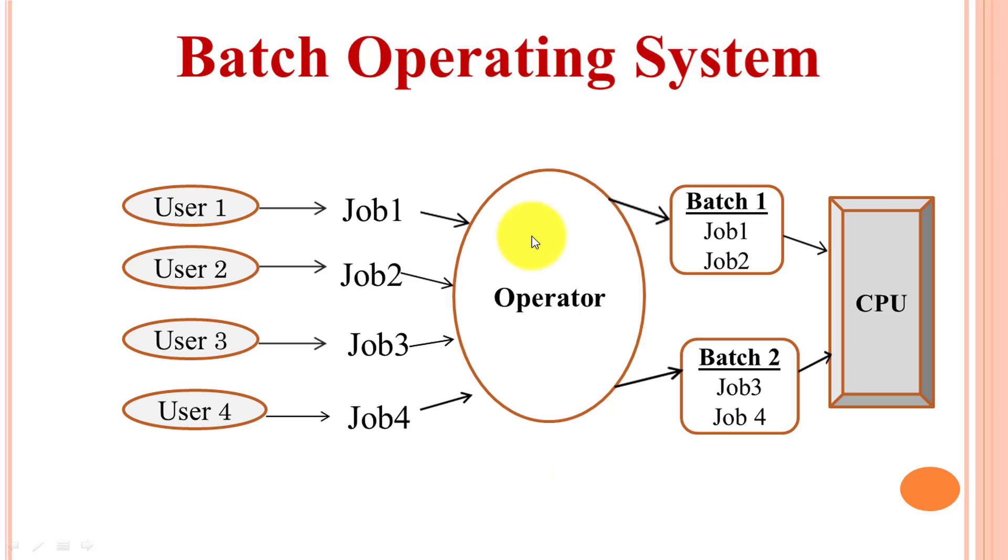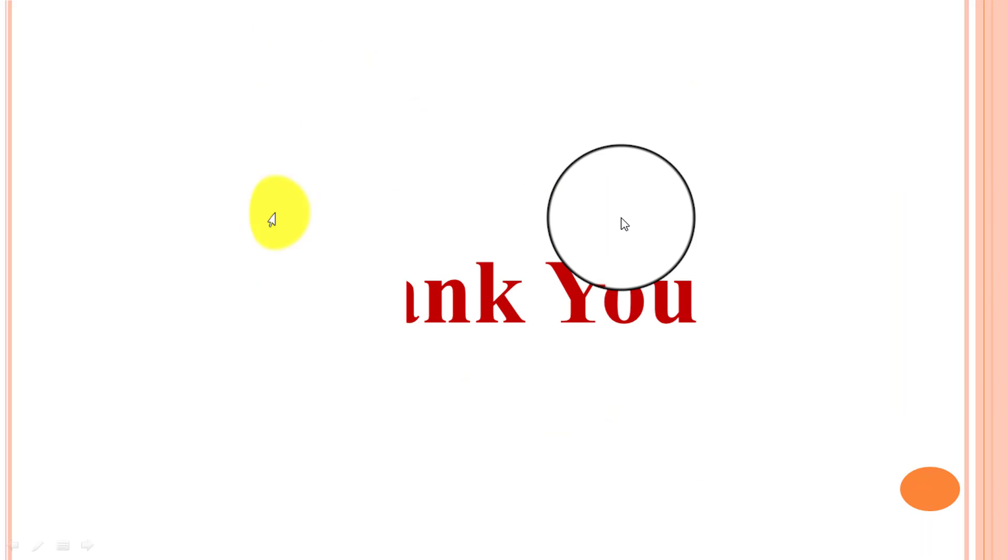The responsibility of the operator is to sort jobs with similar kinds of needs. The operator makes batches with same requirements and submits them one by one to the CPU or computer. So this is all about batch operating system. Thank you.